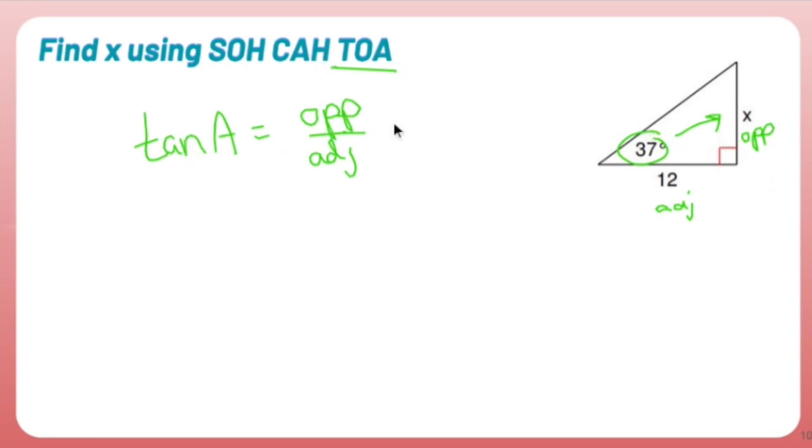But I'm going to set this up according to this. Tangent of my angle, I have my angle, it's 37, is going to equal my opposite side, which I don't know, over my adjacent side, which is 12.